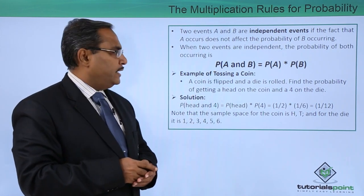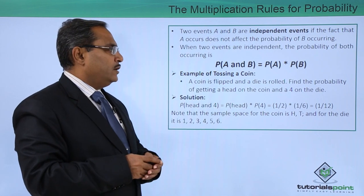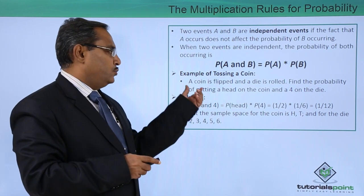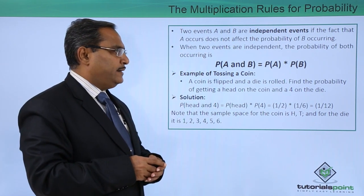Let us take one example for understanding. Example of tossing a coin: a coin is flipped and a die is rolled.